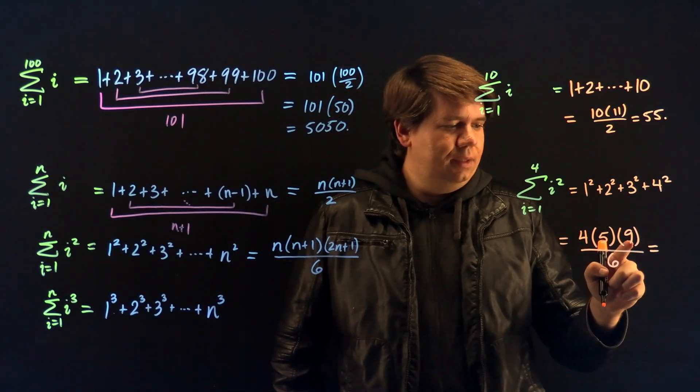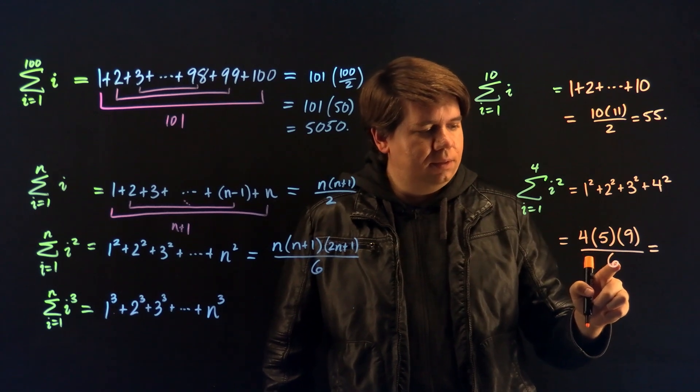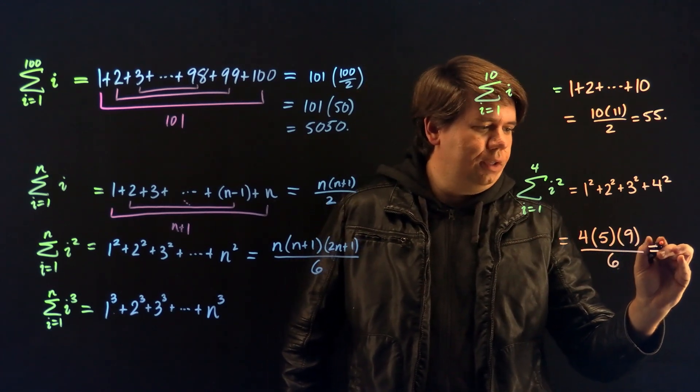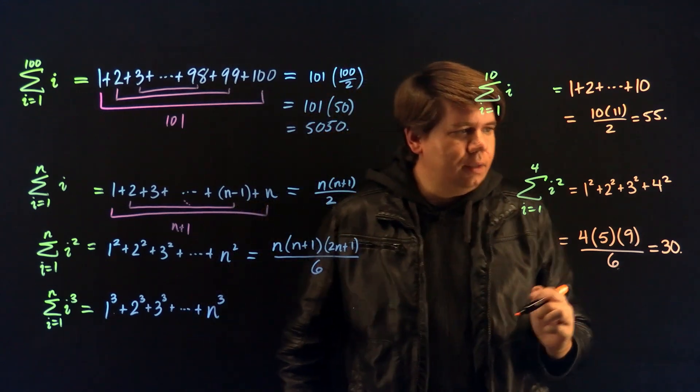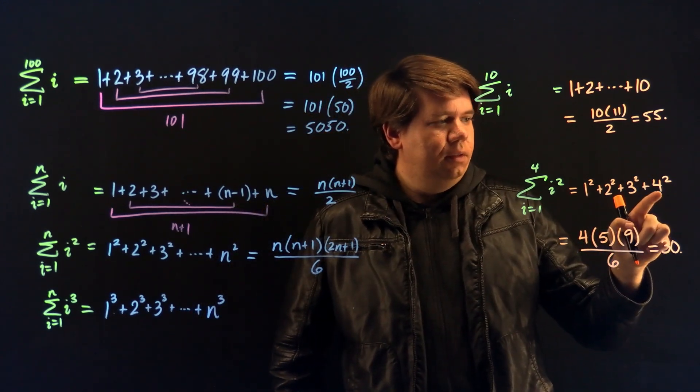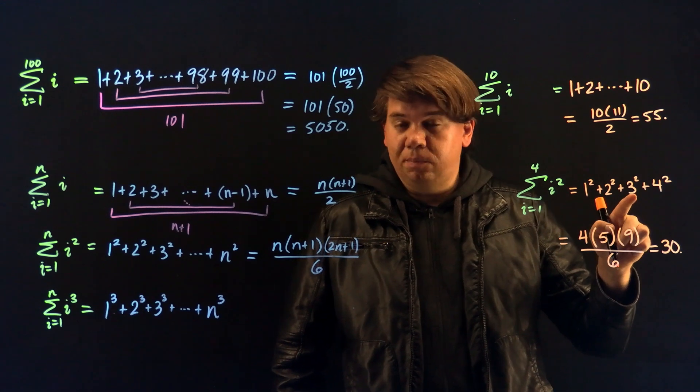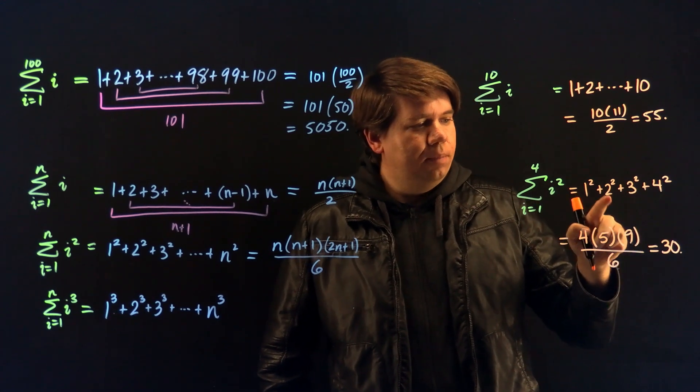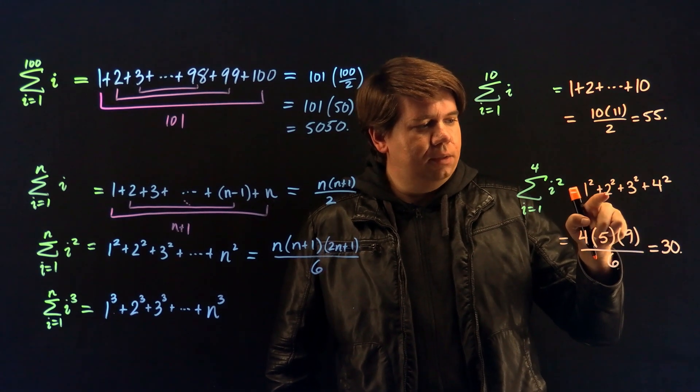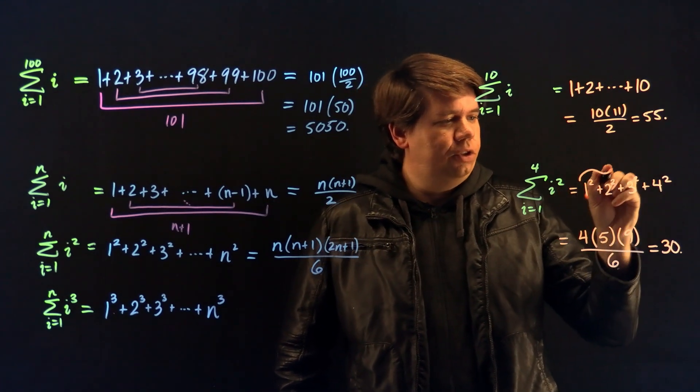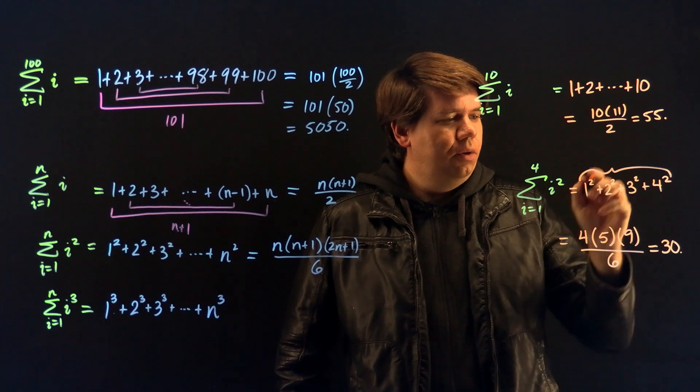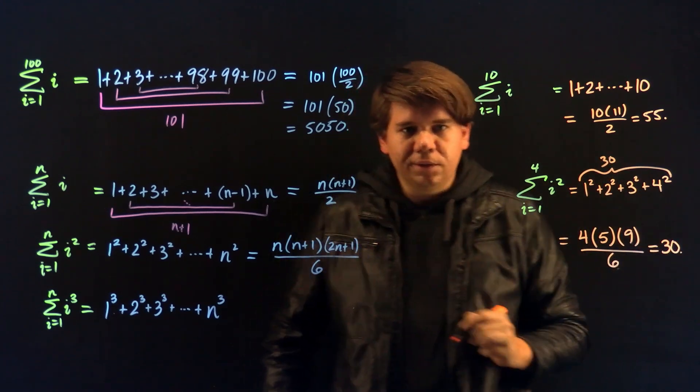What does that come out to be? 4 times 9 is 36, divided by 6 is 6, times 5 is 30. Comes out to be 30. And we can check what is 4 squared, that's 16, plus 3 squared, that's plus 9, that's 25, plus 4 squared, that's plus 4, so that's 29, plus 1 squared. Sure enough, if we sum those up, we get 30. So the formula works.